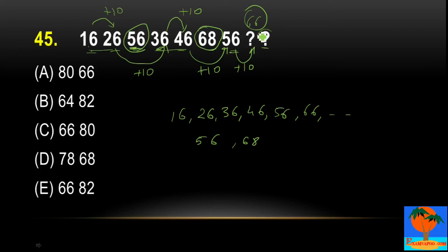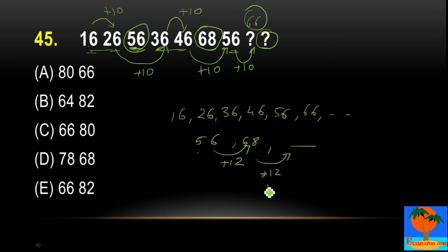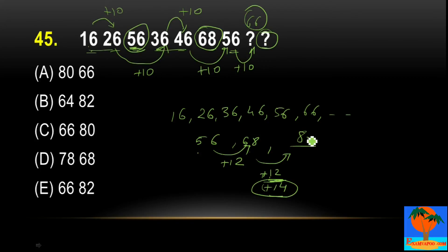So after this question mark, we will get a term of this series. 56, 68 — the next term is plus 12. We can do here plus 12. So 68 plus 12 will give you 80. The term that should come in place of the two question marks should be 66 and 80. My correct answer will be 66 and 80.